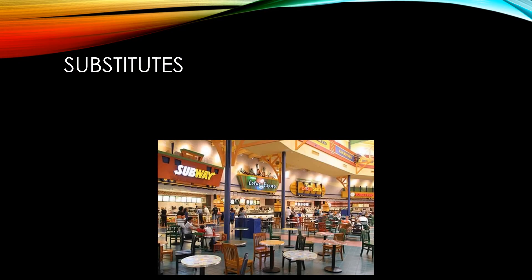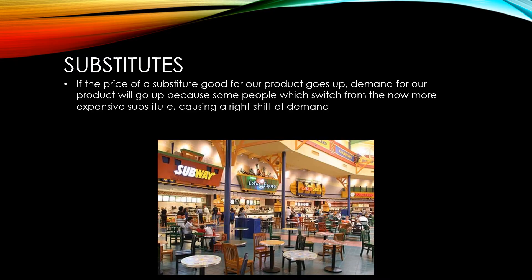A substitute good is an alternative good that a customer might choose to purchase instead of buying your product. Here we can see a food court — although each of the stores sells very different types of food, they are each competing to sell meals to the customers and are a substitute for one another. If the price of a substitute good for our product goes up, then demand for our product will go up as well, because some of the people who were going to buy that substitute will now switch to our product, causing a right shift of demand for us.